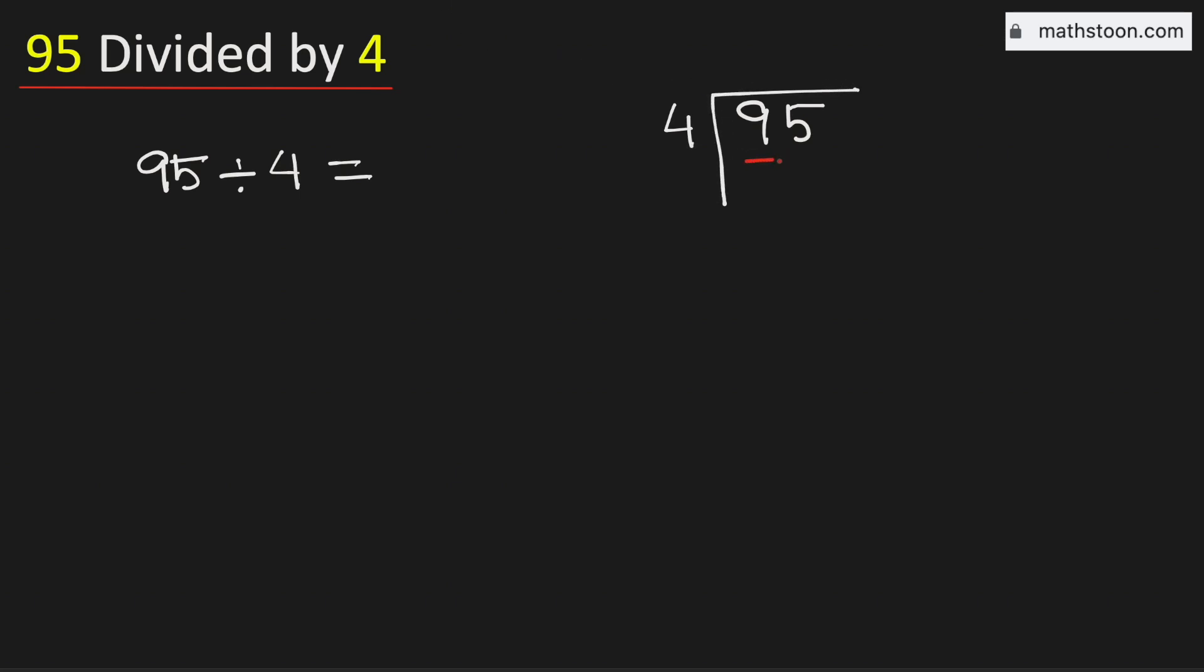Consider the first digit 9. We know that 4 times 2 is 8. Subtract and we get 1. 1 is less than 4. That is why we will bring down this number 5 here.